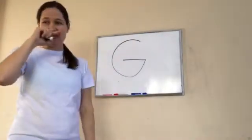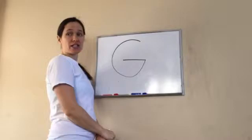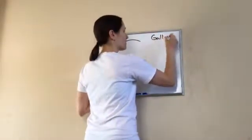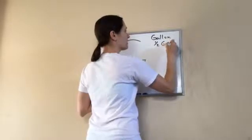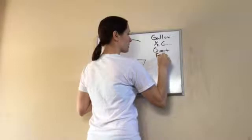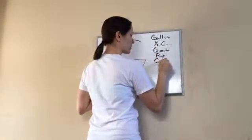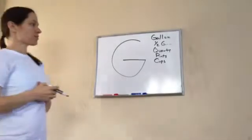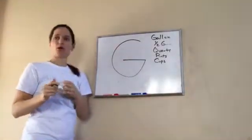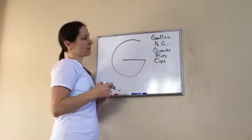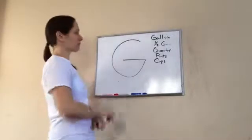First thing I want you to do is draw a G, and that stands for gallon. So we're going to be looking at gallon, half gallon, quarts, pints, and cups. Those are the five measurements that are most often used to describe something we're drinking.